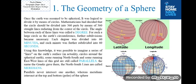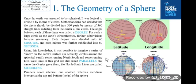Using this knowledge, it was possible to imagine a series of lines on the Earth's surface — in actuality, circles around the spherical Earth — some running North to South and some running East to West. The East-West lines are called parallels, the name the Greeks gave them. The North-South lines are called meridians. Parallels never intersect one another, whereas meridians intersect at the top and at the bottom of the sphere.